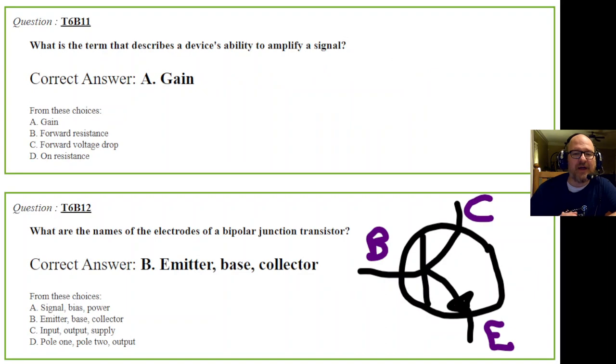Questions 11 and 12: What is the term that describes a device's ability to amplify a signal? That's gain. Gain is also denoted with a capital A, which is funny because they also made it answer A. This is the only time I've told you the letter of the answer. Don't memorize the letters. It's gain. If you don't know, always pick C - you'll have about a 17% chance of getting it right.